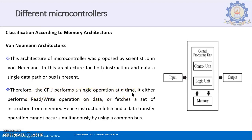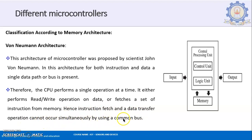In Von Neumann, the CPU either generates an address, reads/writes data, or fetches instructions from memory — it can only deal with data or instructions one at a time. Hence, instruction fetch and data transfer operations cannot occur simultaneously. This makes Von Neumann architecture a slower process compared to Harvard architecture.